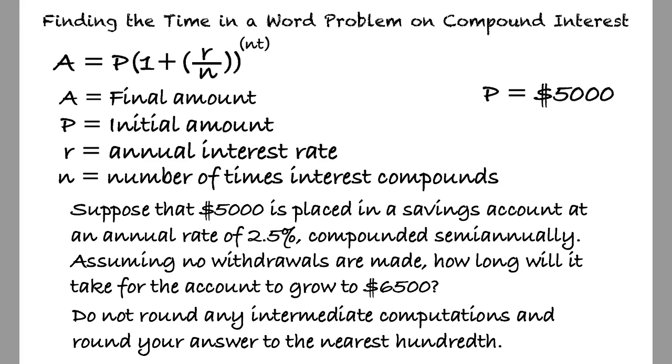Next, the rate is given as 2.5%, compounded semi-annually, meaning twice per year. And since the interest is compounded twice per year, n is equal to 2.